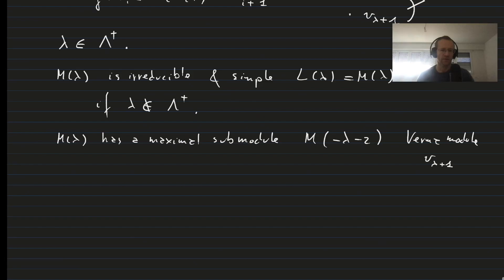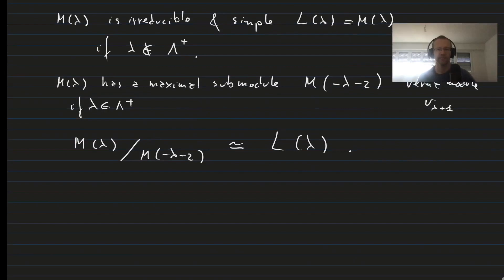Now, so this is if lambda is an element of lambda plus. And then clearly, we can divide M lambda by M minus lambda minus 2. And the representation we get is exactly the simple module L lambda that we discussed before. So this is how simple finite dimensional modules fit into the theory of Verma modules. And this phenomenon wildly generalizes.